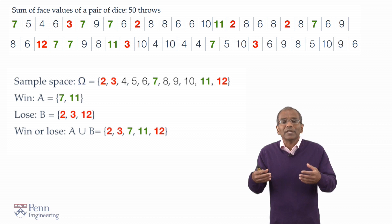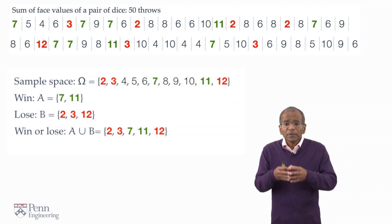That gives rise to the set of possibilities 2, 3, 7, 11, and 12. Very well. Now, here are various events that are possible in this underlying space.